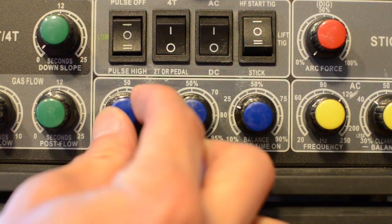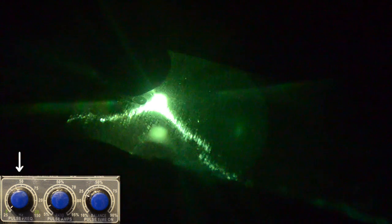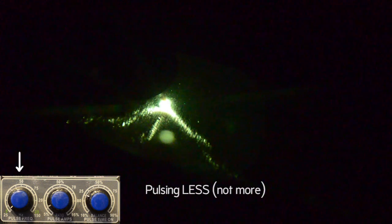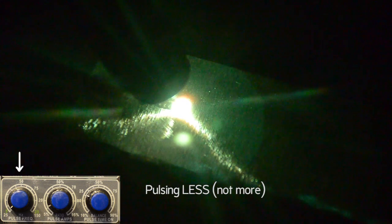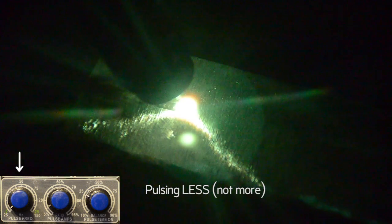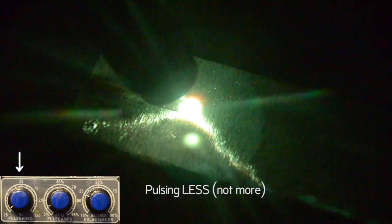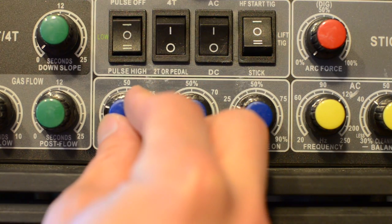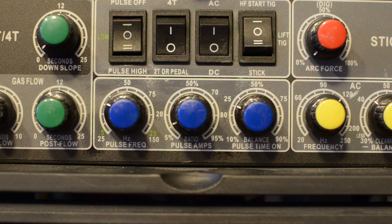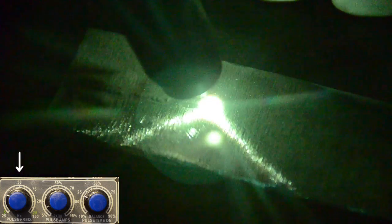Now let's turn pulse frequency down all the way. You can see that it's pulsing a little bit more than before. It was already pretty low on the base setting. Now we'll turn pulse frequency up and you can see a big difference, a seizure-inducing difference.